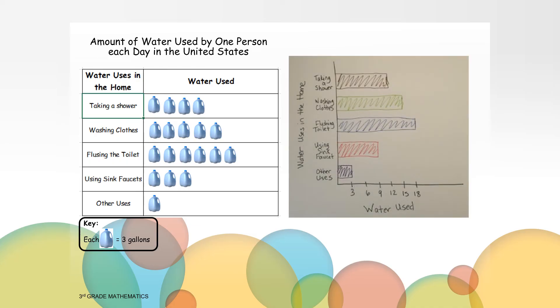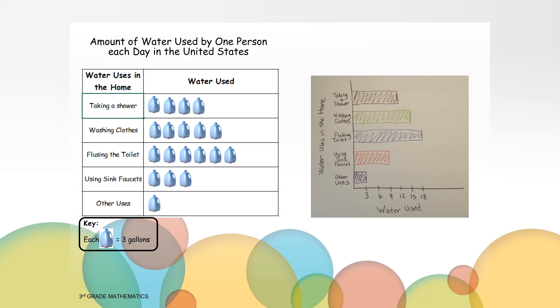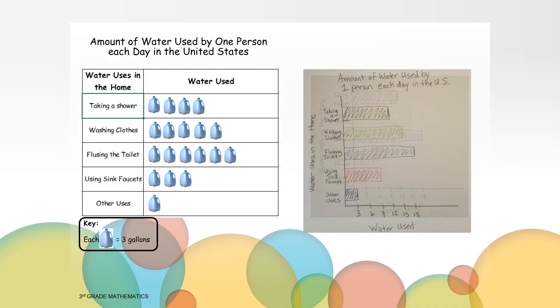Now that we have finished drawing our bars, what's left to do? Look at the pictograph and see what's missing. Correct! We need a title for our bar graph. Go ahead and write the title above the bar graph. We are almost done.